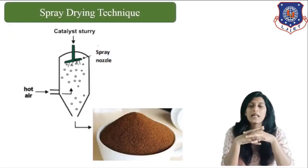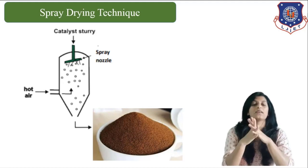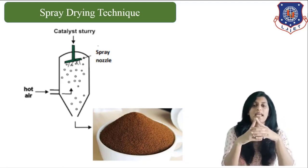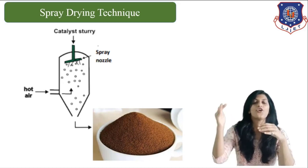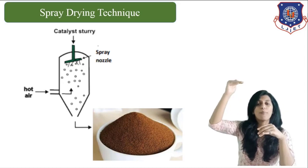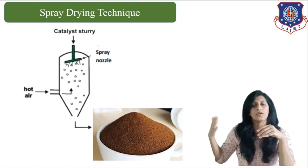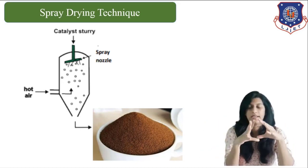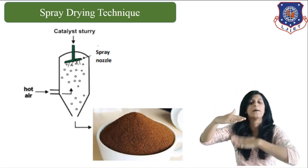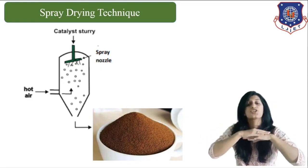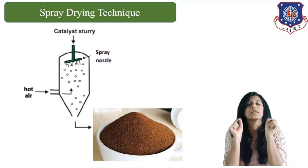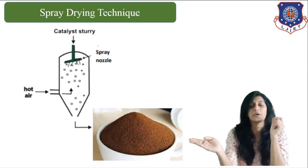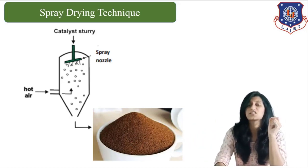The next technique is spray drying. In spray drying, catalyst slurry is supplied from the topmost part of the reactor, and hot air is supplied from near the bottom or middle of the reactor. When the catalyst slurry comes in contact with the hot air, moisture content is removed, and a dry powdered form of catalyst is obtained from the bottom of the reactor.